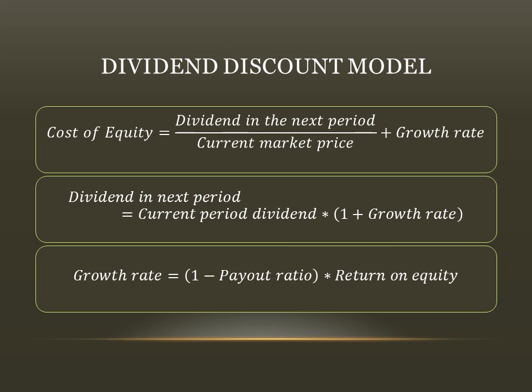Dividend Discount Model: the required rate of return on equity capital is arrived at by discounting future dividend and growth rate. Cost of equity equals dividend in the next period divided by current market price, plus growth rate. Dividend in the next period equals current period dividend multiplied by one plus growth rate. Growth rate equals one minus payout ratio, multiplied by return on equity.